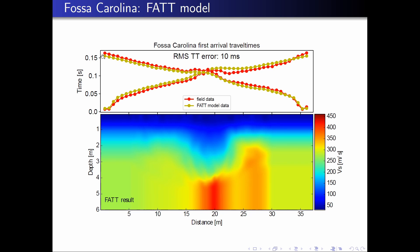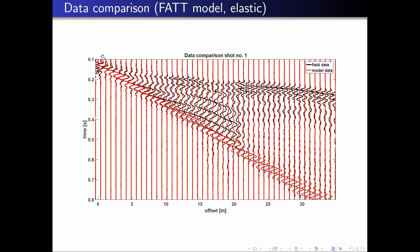This might be a good starting point for the waveform inversion. Before running on a supercomputer, it is a good idea to also calculate synthetic seismic waveforms. I used a 2D finite difference code to solve the 2D SH problem for the velocity model derived from first arrival travel time tomography. Here you can see a seismogram comparison of the first shot: black wiggles denote the field data, while the modeled data is shown in red.